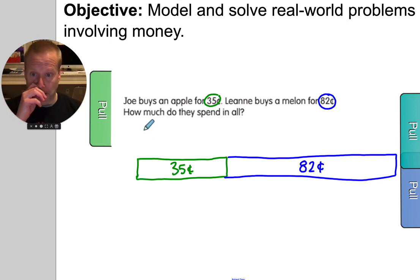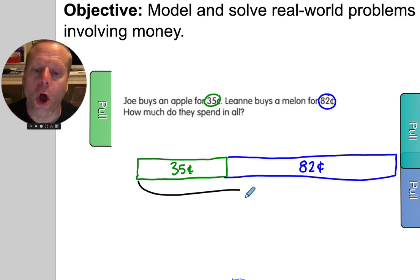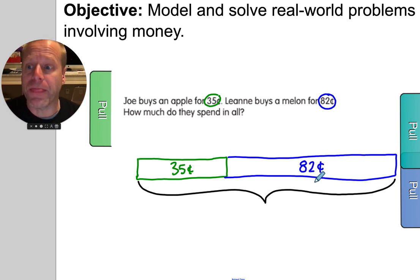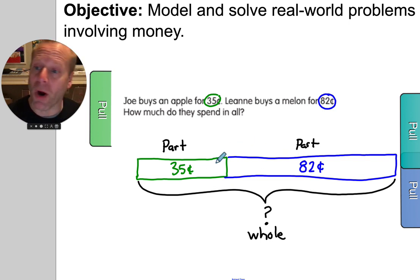Now here comes the good part. How much do they spend in all? So what they're asking is they're not asking you how much the melon is. We know that. We got the melon part. They're not asking you what the apple costs. We know that. We have the apple part. What we're missing, and that's where I'm going to put my question mark, is we are missing the whole thing. How much they spent on both these parts, right? Now, when you're missing the whole thing, you always add the two little things, like Legos. You put them together to get the whole answer.